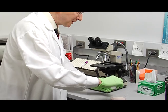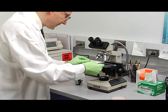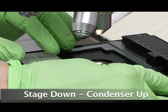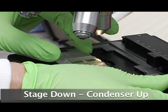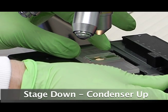Take it carefully out of your moisture chamber and place it on the stage of your microscope. The microscope stage should be all the way down and the condenser up.